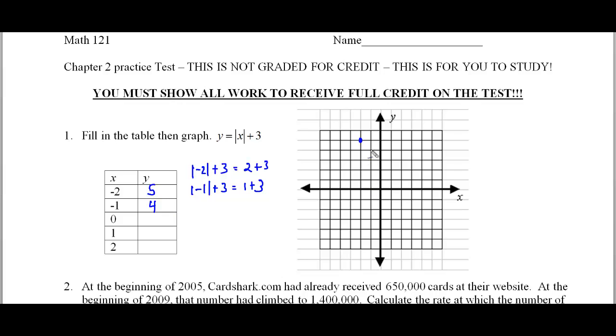So negative one, one, two, three, four. There's the dot. Absolute value of zero plus three is zero plus three, which is three. So zero comma three, the y-intercept of this problem is right there.